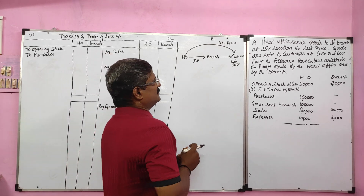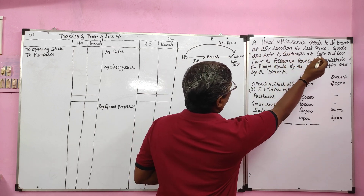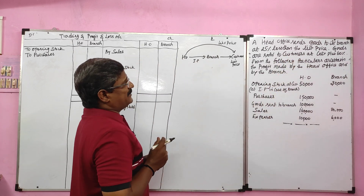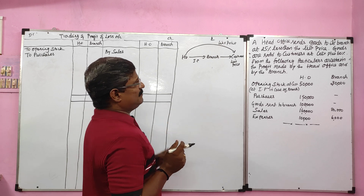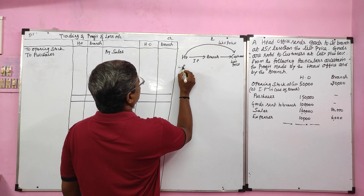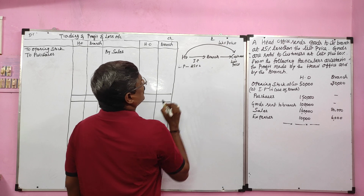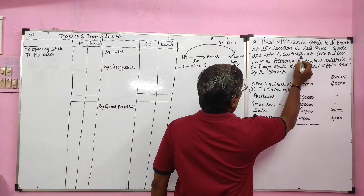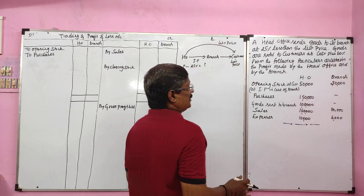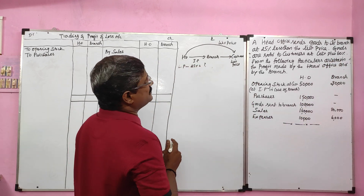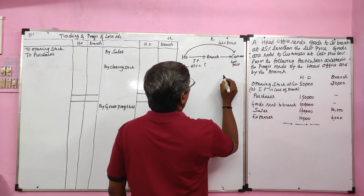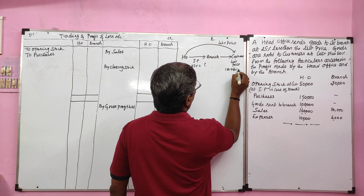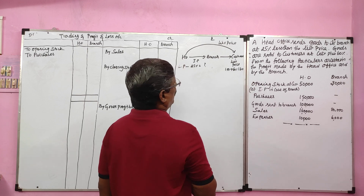The head office sends goods to its branch at 25% less than the listed price, so the invoice price is 25% less than the listed price — list price minus 25% gives invoice price. Goods are sold to customers at cost plus 60%. Cost is always 100, profit is 60, so the list price is 160.